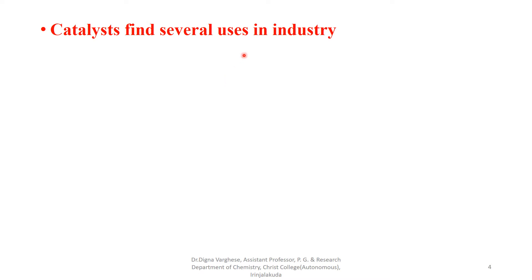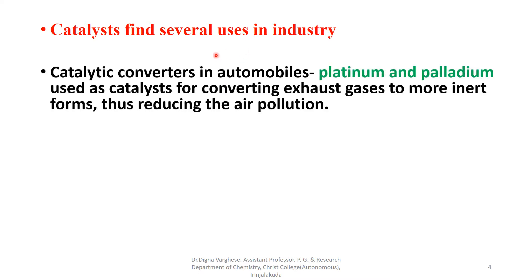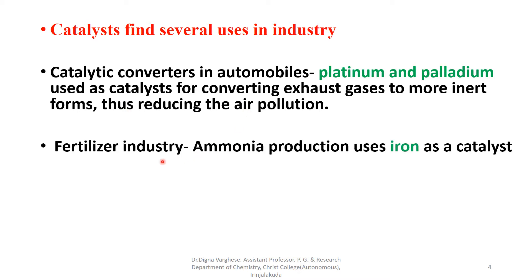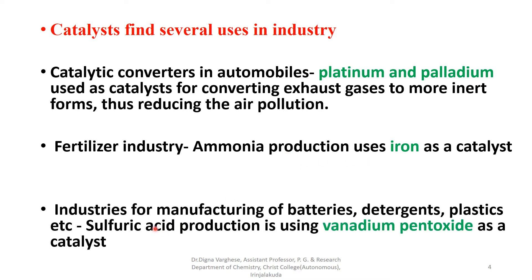Catalysts find several uses in industry. Catalytic converters in automobiles use platinum and palladium as catalysts for converting exhaust gases to more inert forms, thus reducing air pollution. In the fertilizer industry, ammonia production uses iron as a catalyst, as well as industries for manufacturing batteries, detergents, plastics, etc. Sulphuric acid production uses vanadium pentoxide as a catalyst.